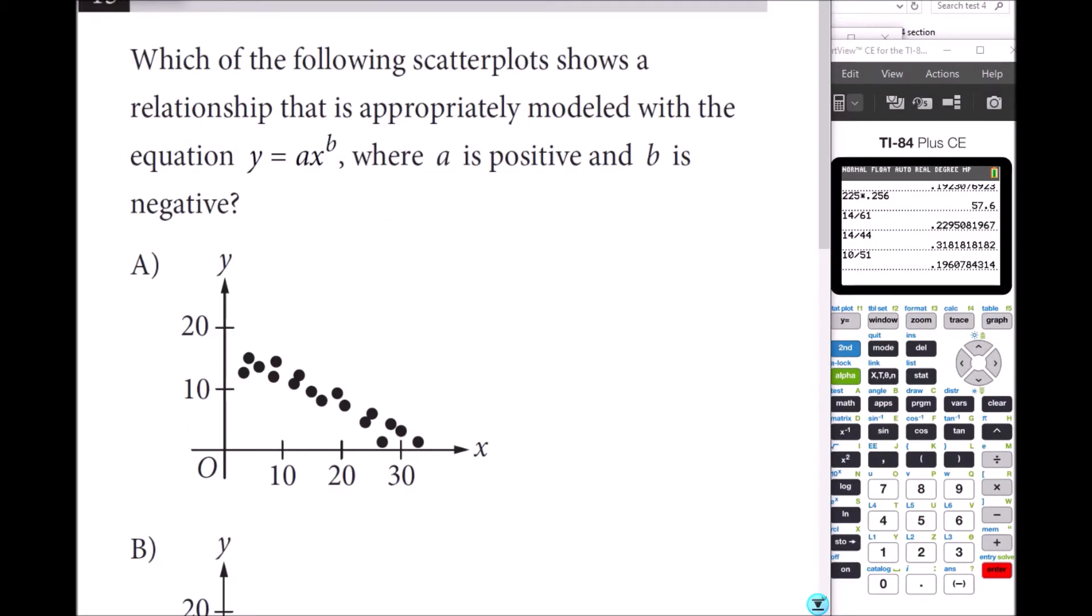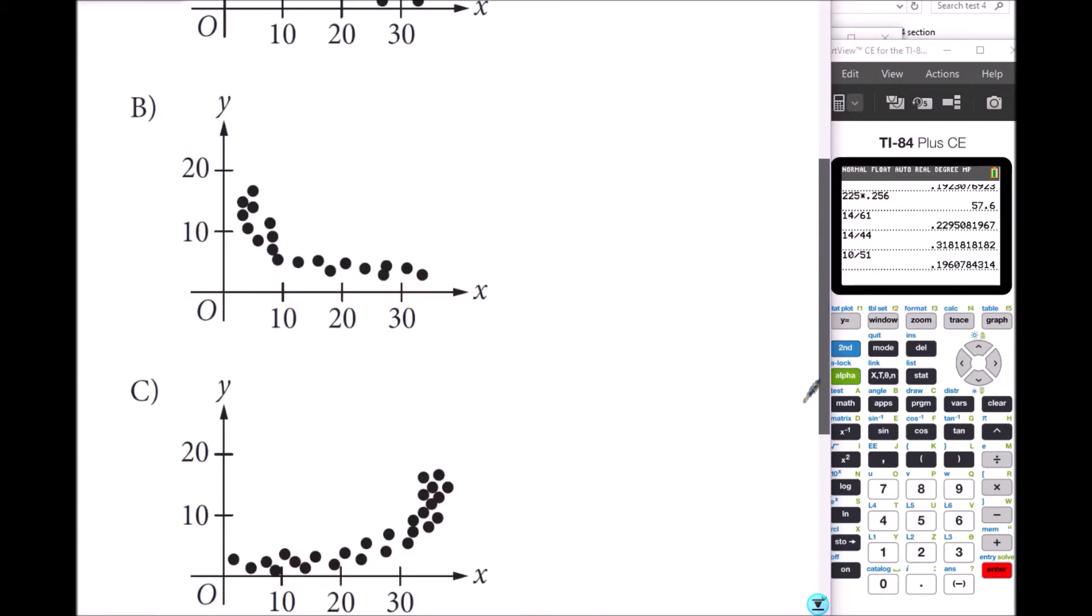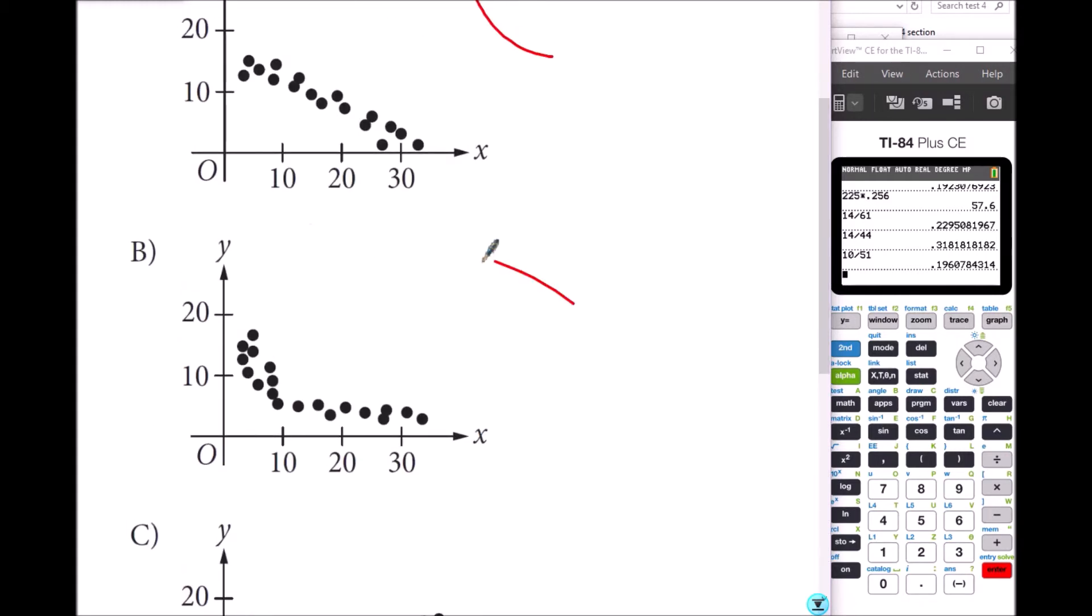Number 15: Which of the following scatterplots shows a relationship that is appropriately modeled with the equation where A is positive and B is negative? Then it will be exponential decay, right? It's the exponential decay function. So it is B.